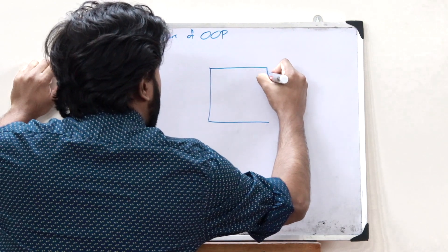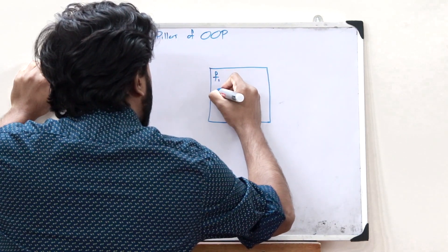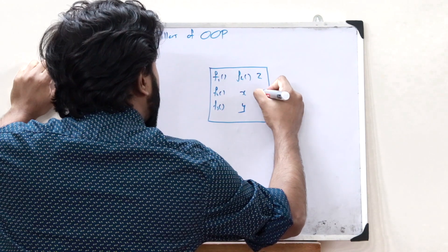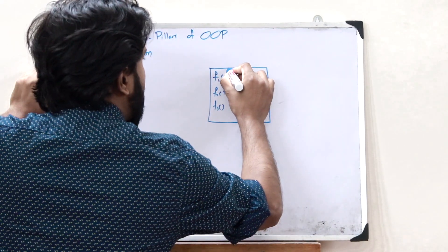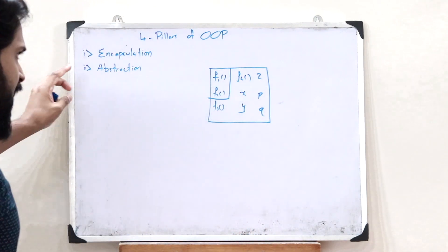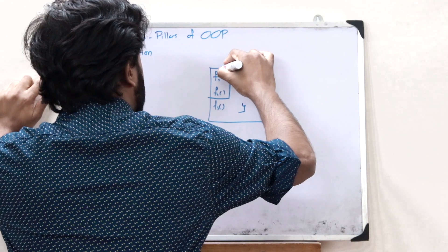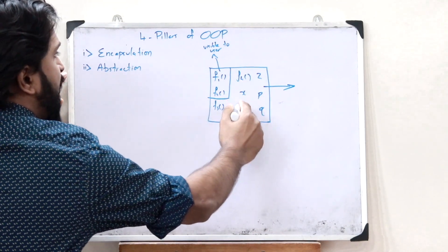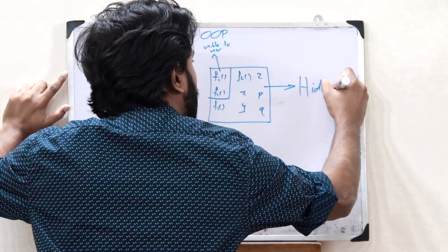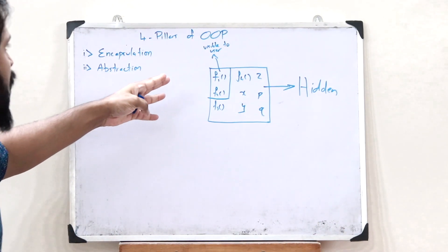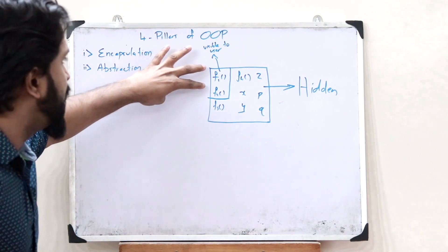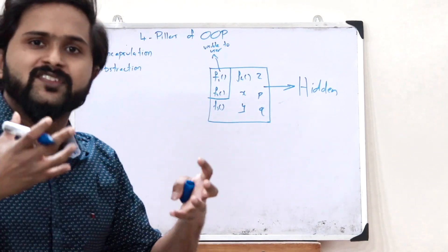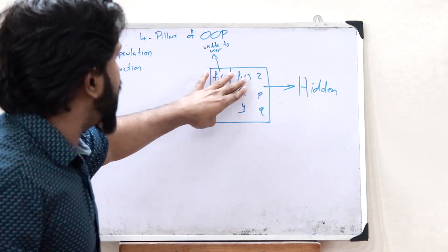In the case of a particular object, assume functions f1, f2, f3, f4 and variables x, y, z, p, q. If only f1 and f2 are the essential features that need to be shown to the user, those are shown while all the other functions and variables are hidden from the user. This is data abstraction. A major advantage is that it makes the user interface simpler and easier to understand.